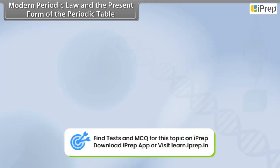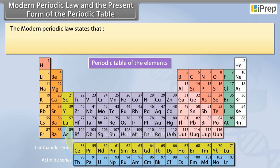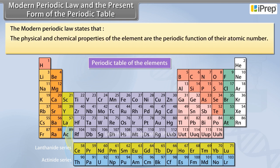Modern Periodic Law and the Present Form of the Periodic Table. The Modern Periodic Law states that the physical and chemical properties of the elements are the periodic function of their atomic number.